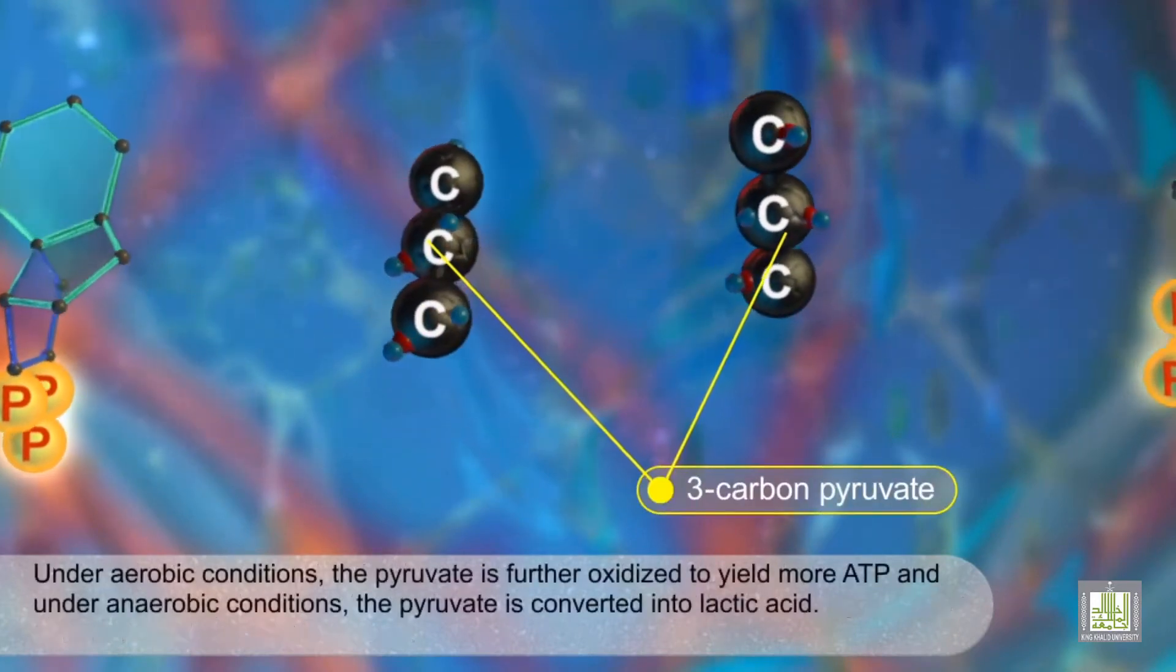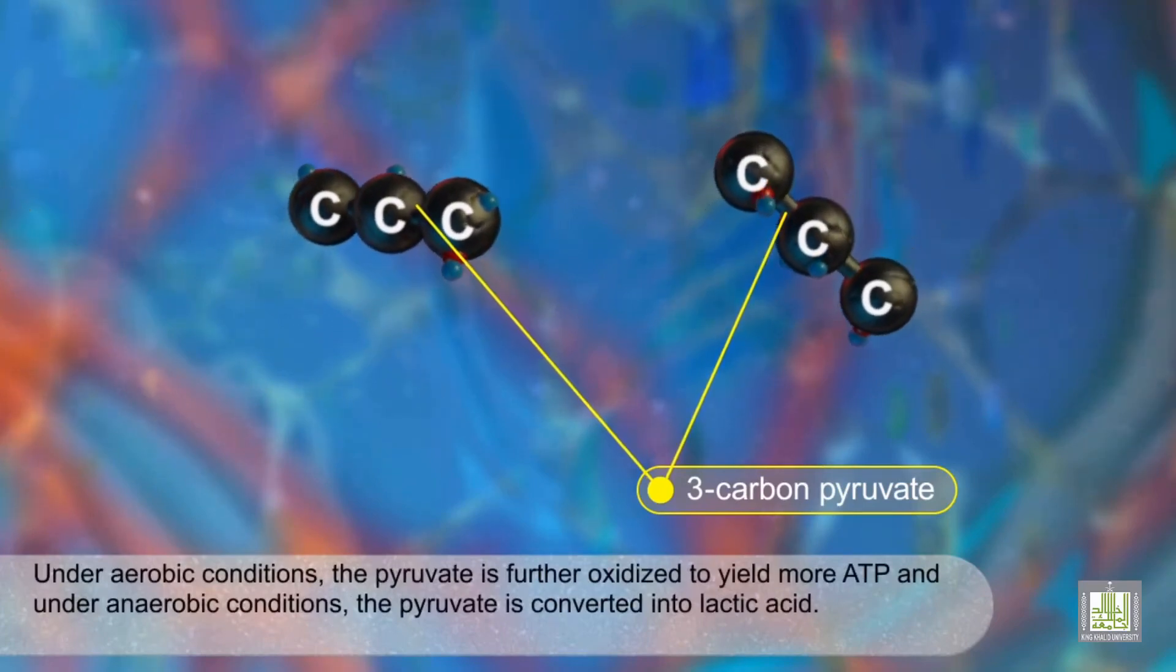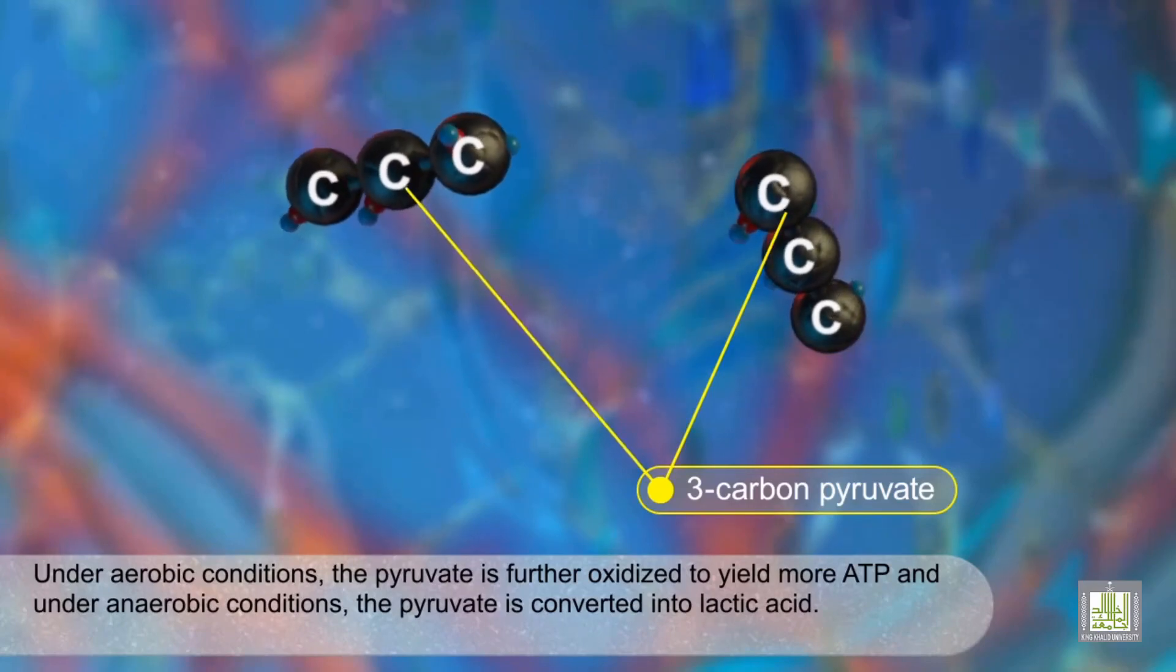Under aerobic conditions, the pyruvate is further oxidized to yield more ATP, and under anaerobic conditions, the pyruvate is converted into lactic acid.